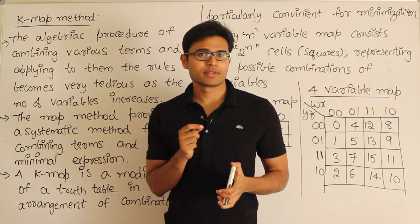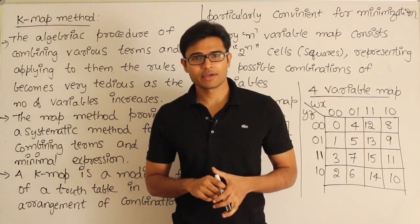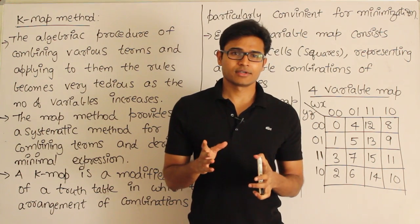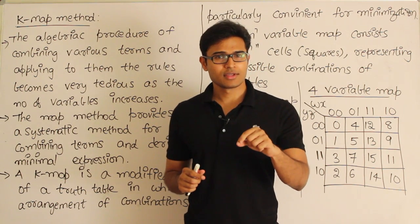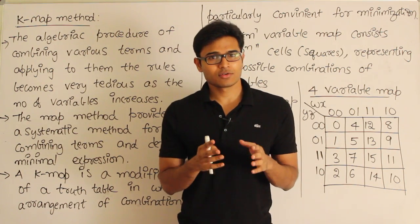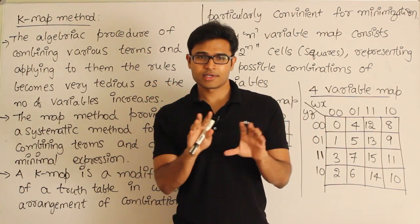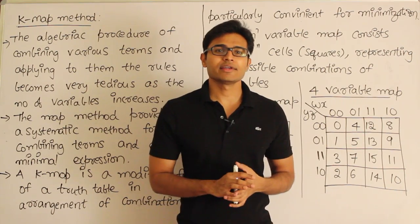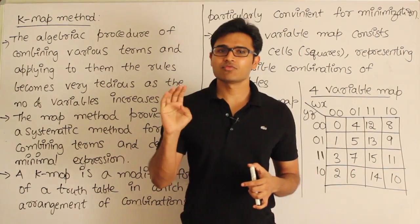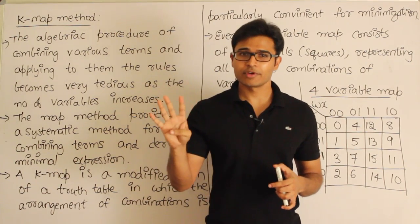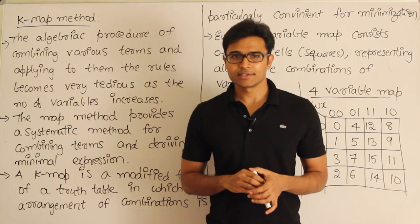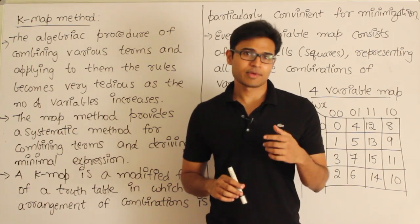So a better, more convenient method has been introduced and it is called K-map. K-map is particularly convenient to both represent the function and to minimize it. It lends itself so that we could easily visualize the function and then minimize it. In exams, they'll give you either three variables or four variables, and for three and four variables, K-map is the best way to minimize it. There are other ways also, but K-map is the best one.